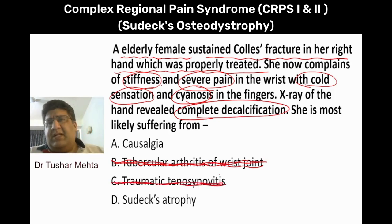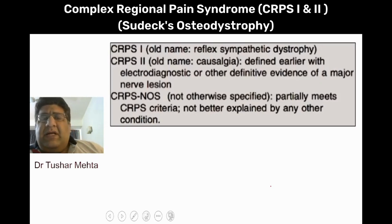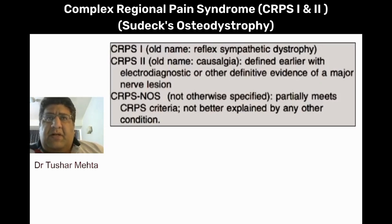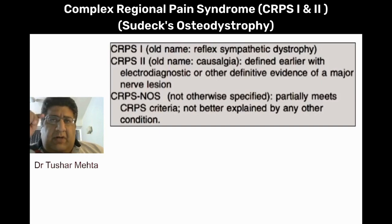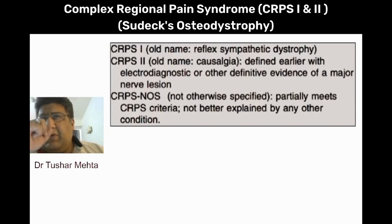What is causalgia? What is pseudosteoarthrodystrophy? It's simple. There is a term called CRPS — Complex Regional Pain Syndrome — which is primarily of two types. What is written on your screen shows three types, but primarily it is two types: Type 1 and Type 2.